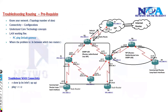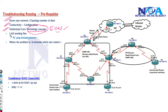Before we start, as we covered in previous sections, there are a few prerequisites to keep in mind. At this point I expect you to know your network topology and connectivity, and also to understand the core technology concepts — like how EIGRP works and how it is configured properly. We are also going to assume that the LAN is fine, so there is no problem on the LAN side.